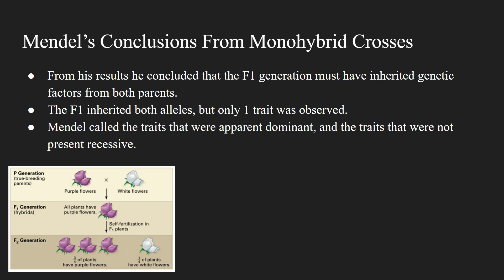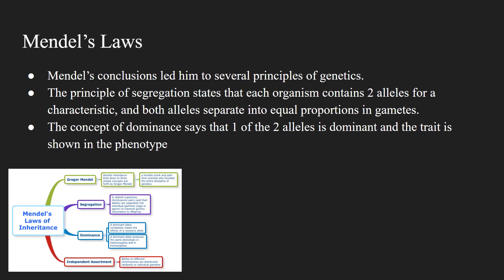Now let's discuss Mendel's laws. Mendel's conclusions led him to several principles of genetics. The principle of segregation states that each organism contains two alleles for a characteristic, and both alleles separate into equal proportions in gametes. The concept of dominance says that one of the two alleles is dominant and the trait is shown in the phenotype. Dominant alleles in plants are usually shown by an uppercase letter, recessive alleles by a lowercase letter, and the dominant allele is always put ahead of the recessive allele.